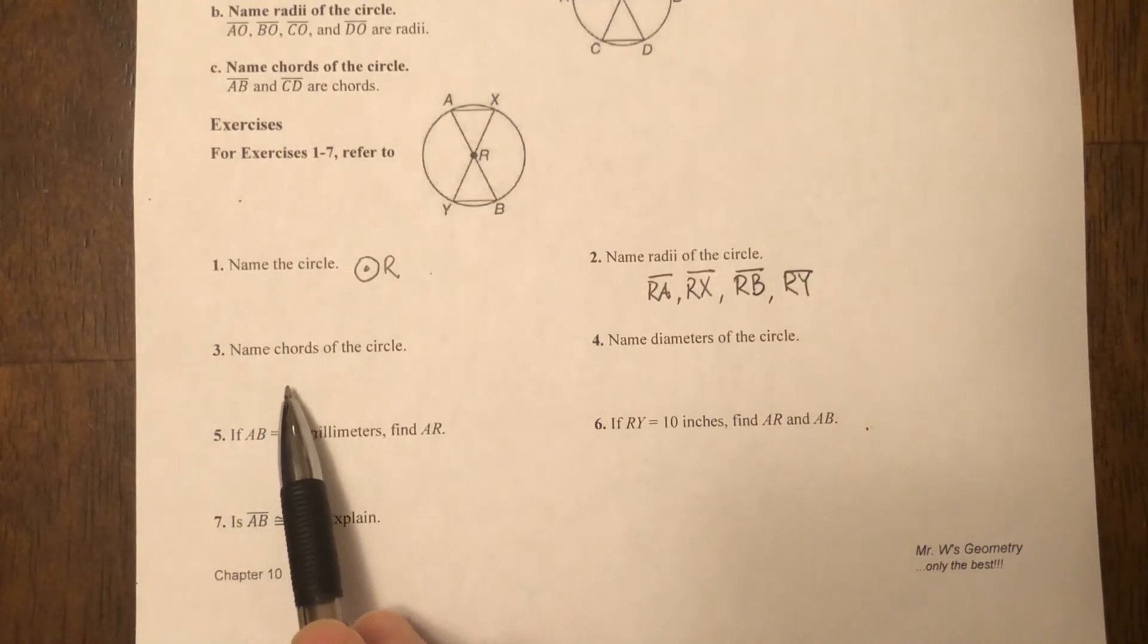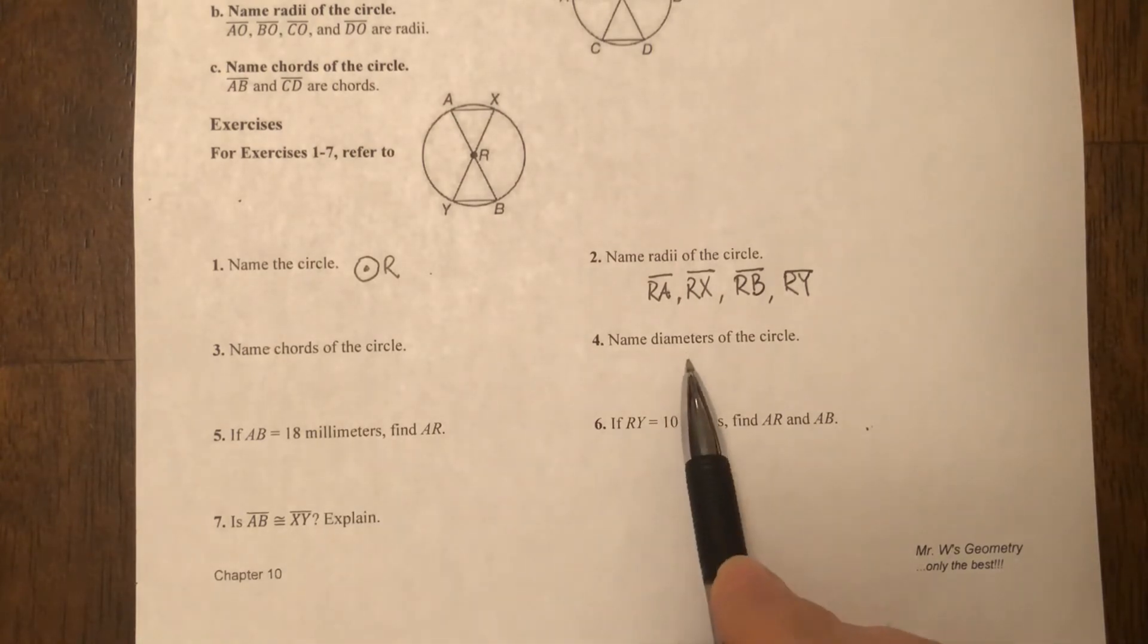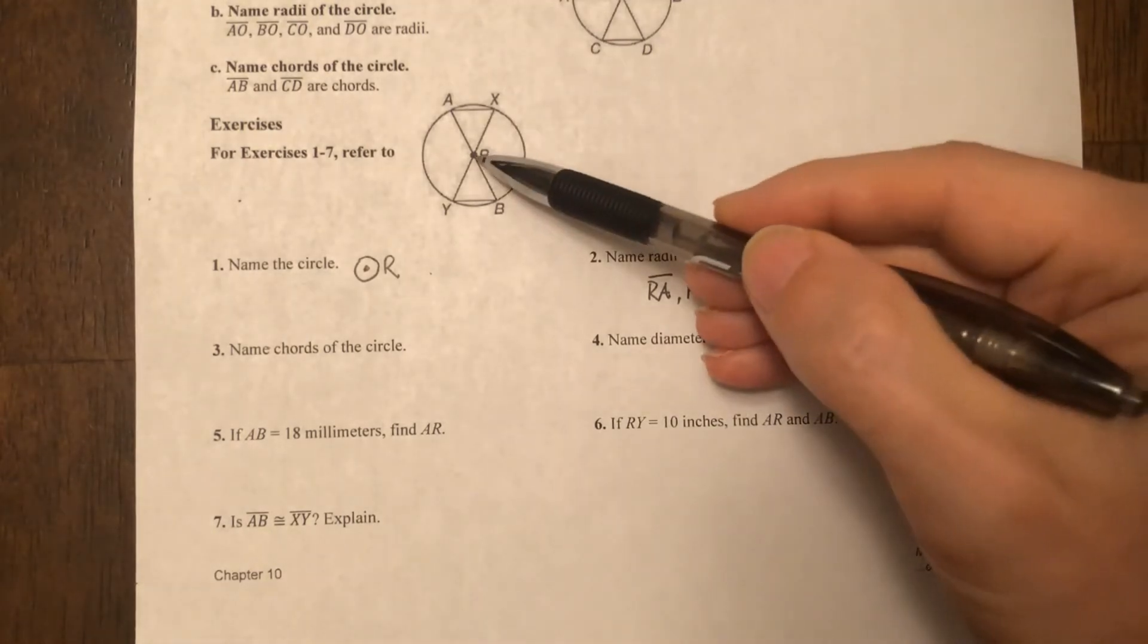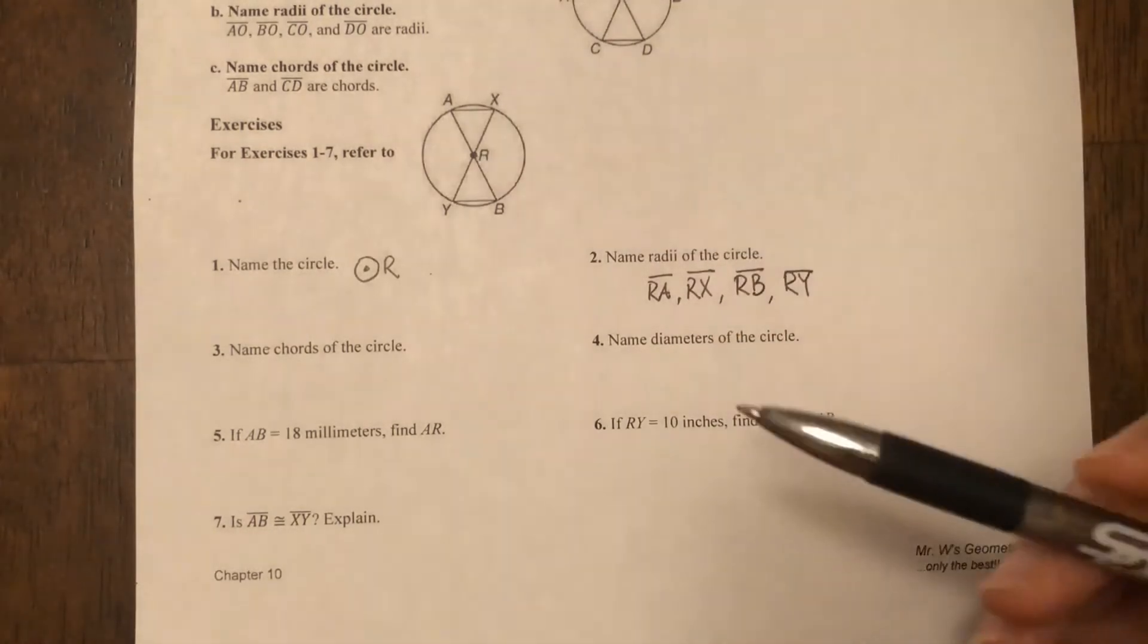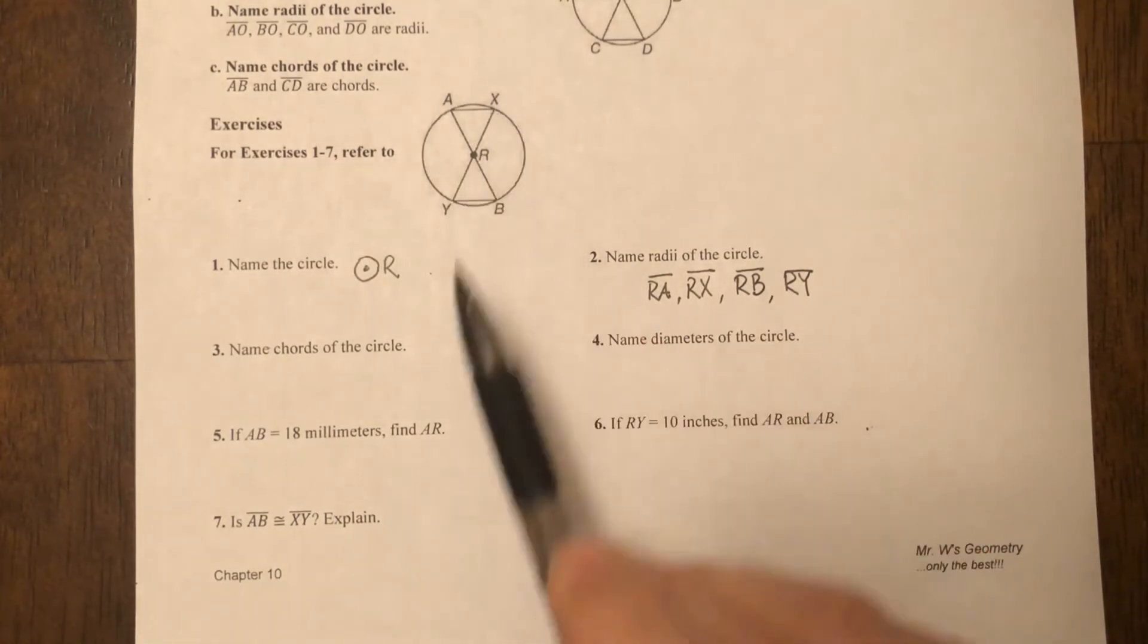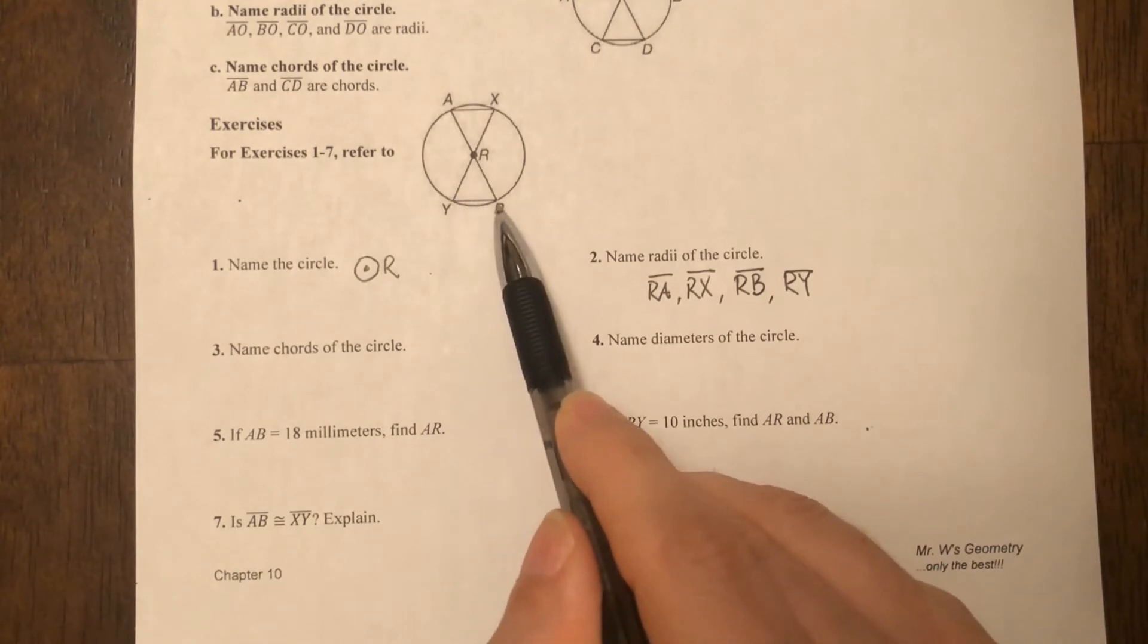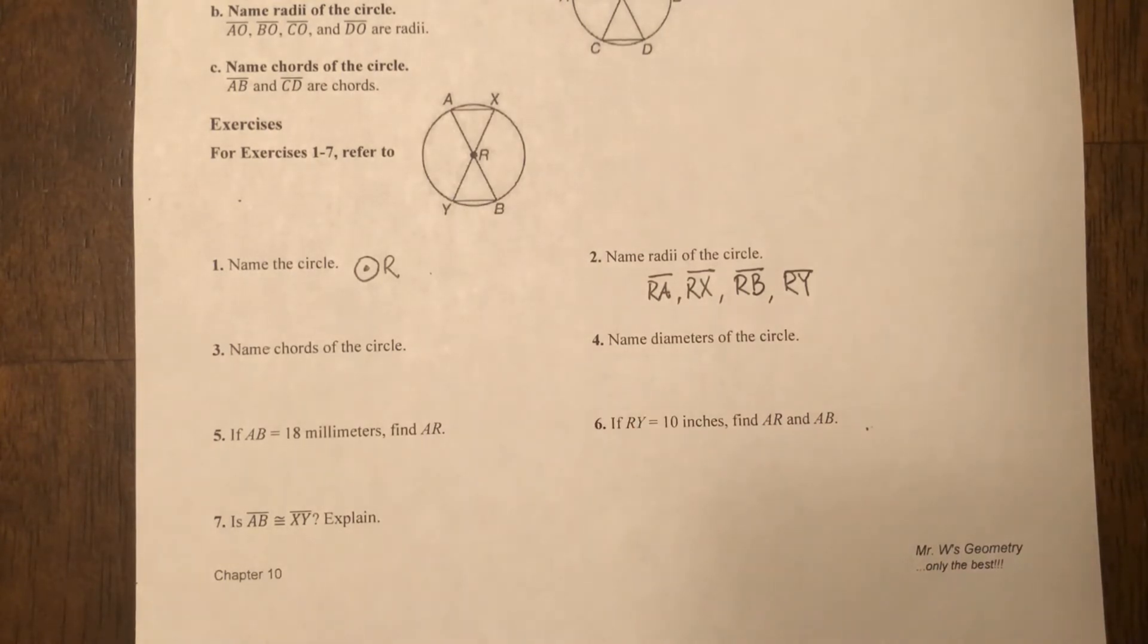Now here it says name the chords of the circle. A chord is a segment that goes from the circle to the circle. Diameter is also a chord but it's a special chord—it's a chord that goes through the center of the circle. If it goes through the center from circle to circle, then it's diameter. If it doesn't go through the center from circle to circle, then it's just a chord.